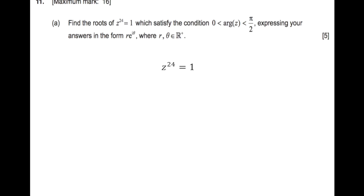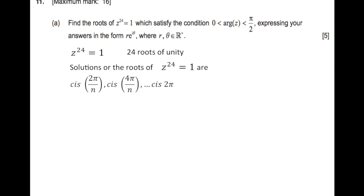When z to the power of 24 equals 1, z is a complex number and we are looking for the 24 roots of unity, meaning there are 24 solutions. The solutions are in the form cis(2π/n), then cis(4π/n), and you keep adding 2π in the numerator of the argument, up to cis(2π).